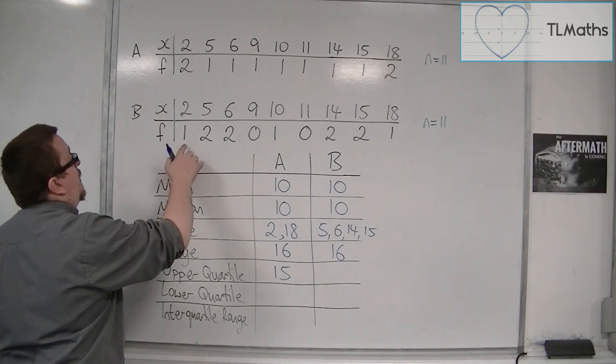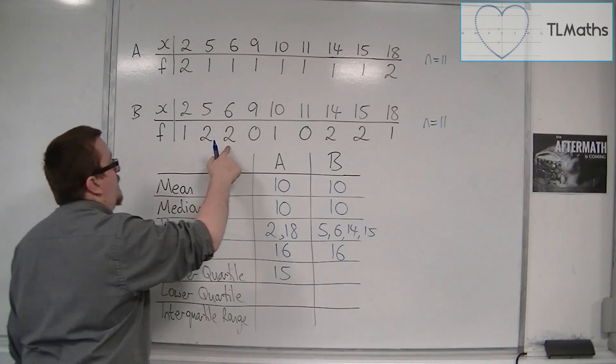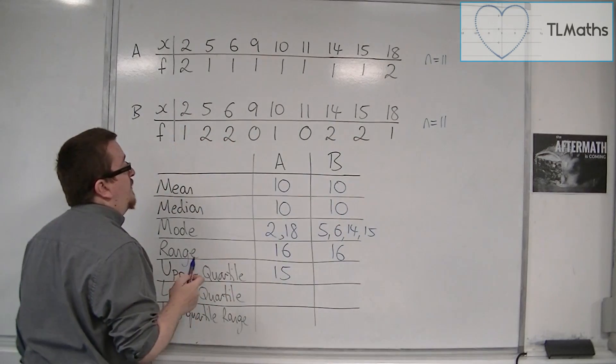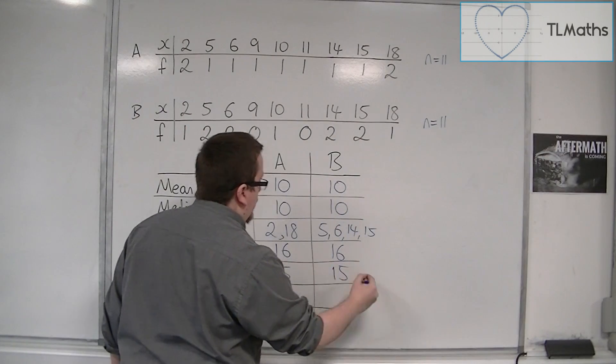And it would be the same for B. So 1, 2, 3, 4, 5, 6, 7, 8, 9. And so the ninth data value would also be 15 for B.